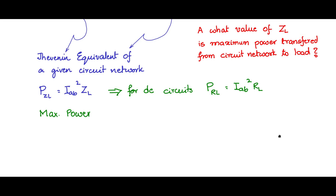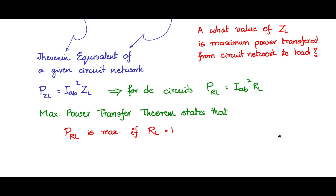The maximum power transfer theorem states that the power transferred to the load RL is maximum if RL equals R_Thevenin or R_Norton — that is, if RL equals the driving point impedance of the circuit network, whether represented as a Thevenin or Norton equivalent, then maximum power is transferred to RL.